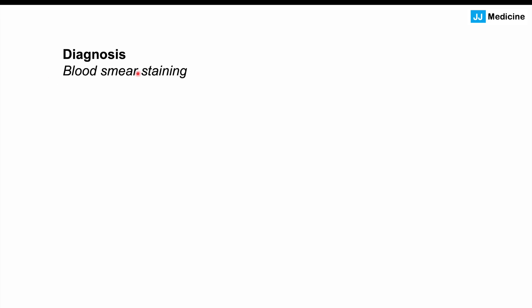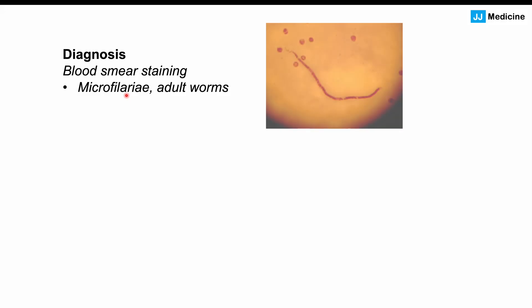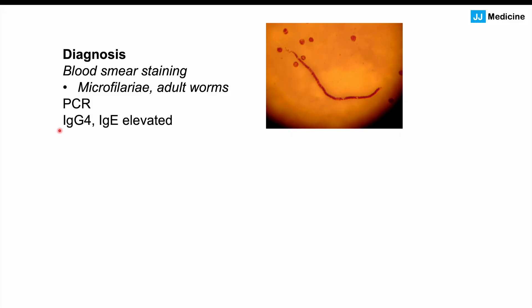Diagnosis of loa loa infections is typically by blood smear staining, where you can literally see microfilariae or adult worms. Newer methods include PCR. Blood work showing elevated IgG4 and IgE levels is also seen in loa loa infections. An important point is that because this infection can appear like other infections such as river blindness, we can see microfilariae in both conditions.